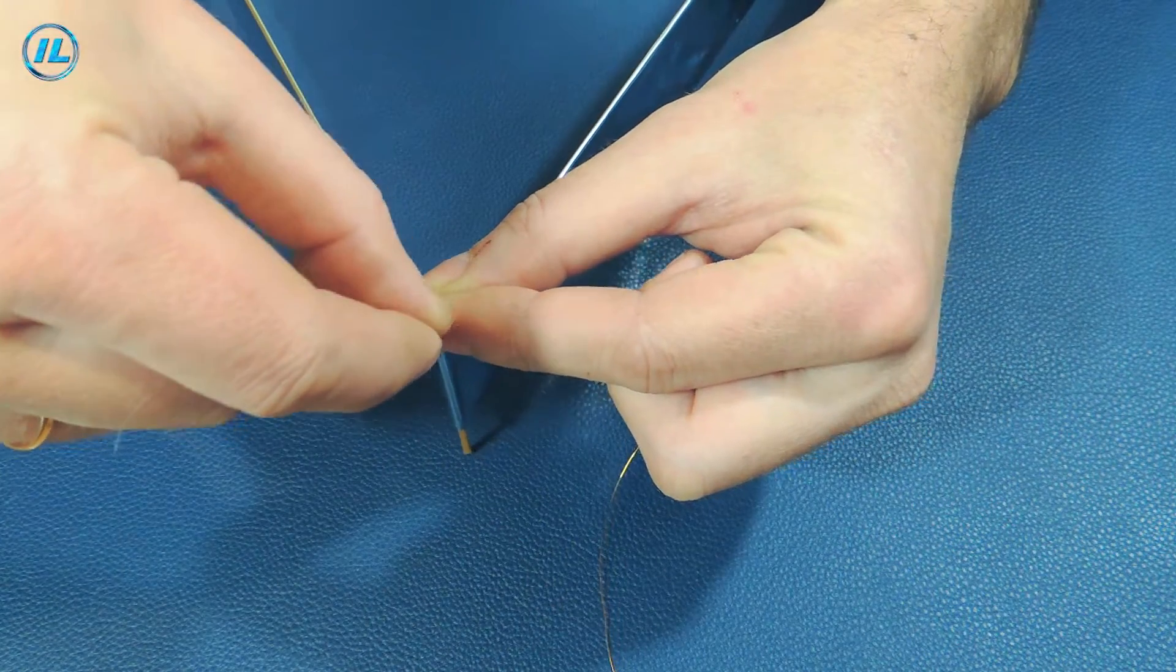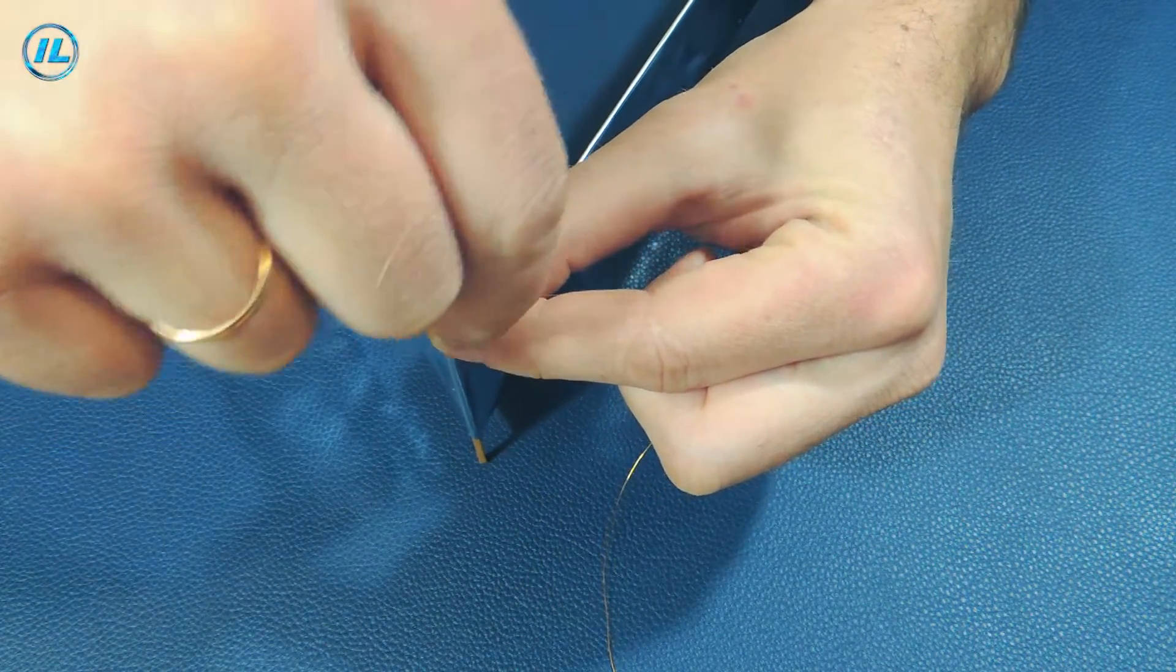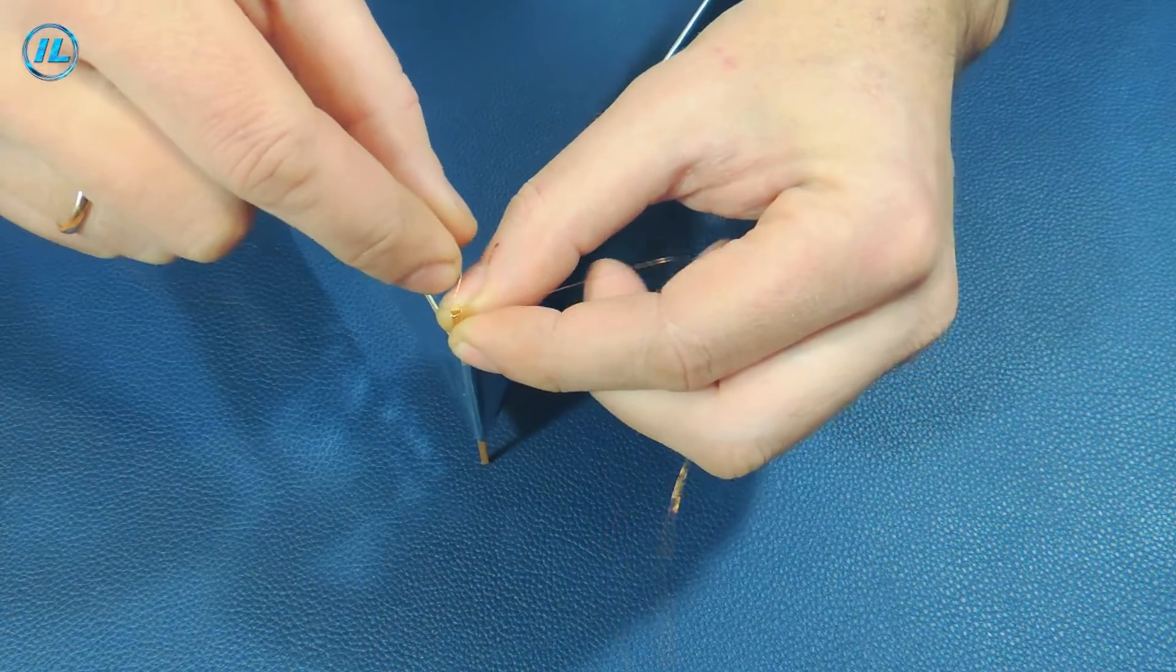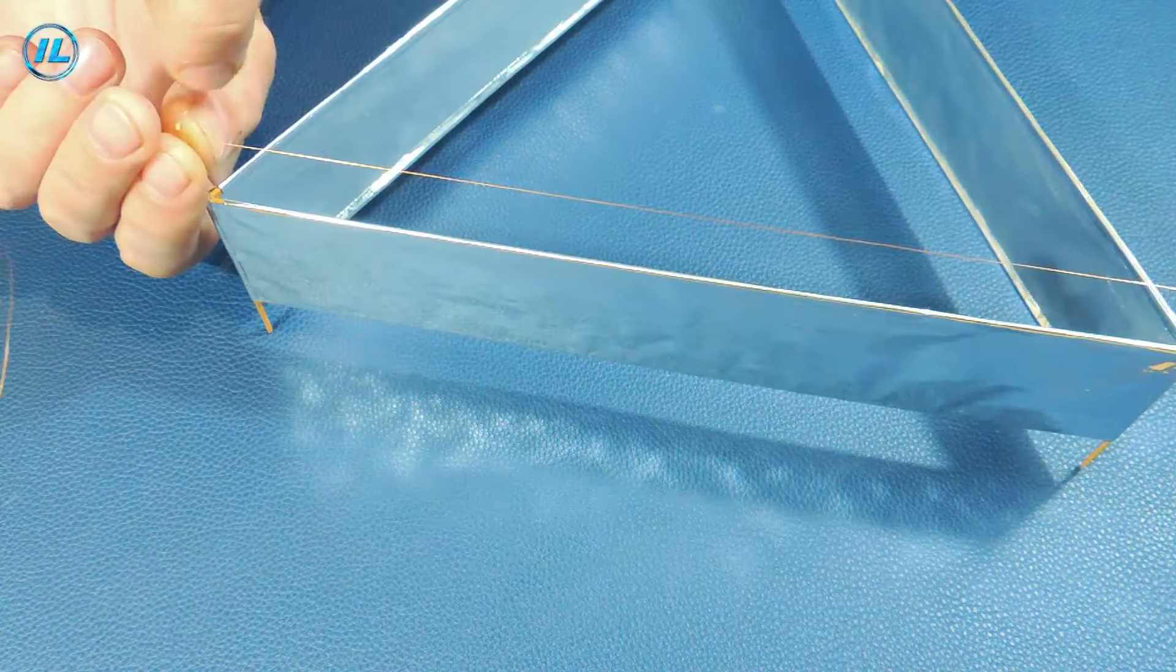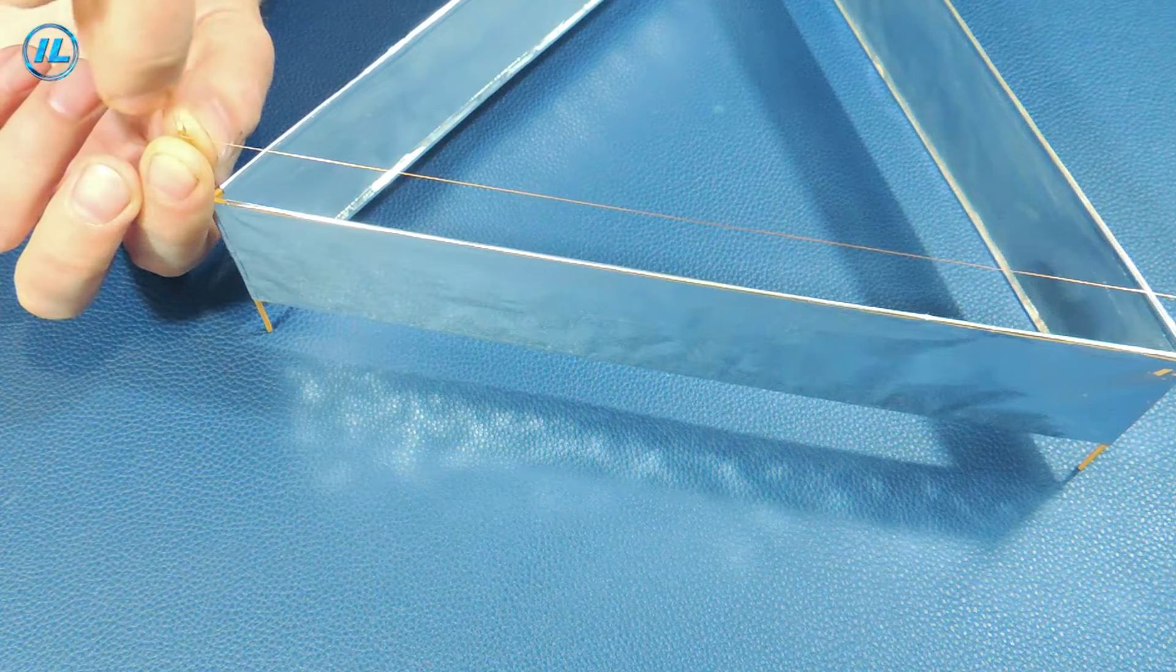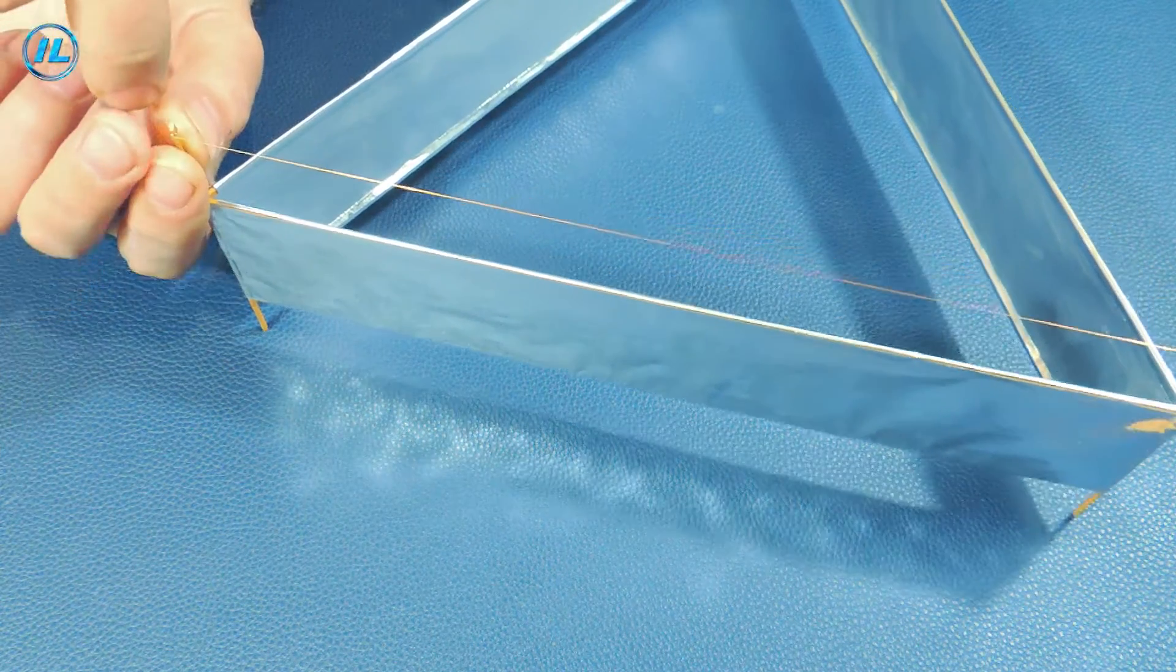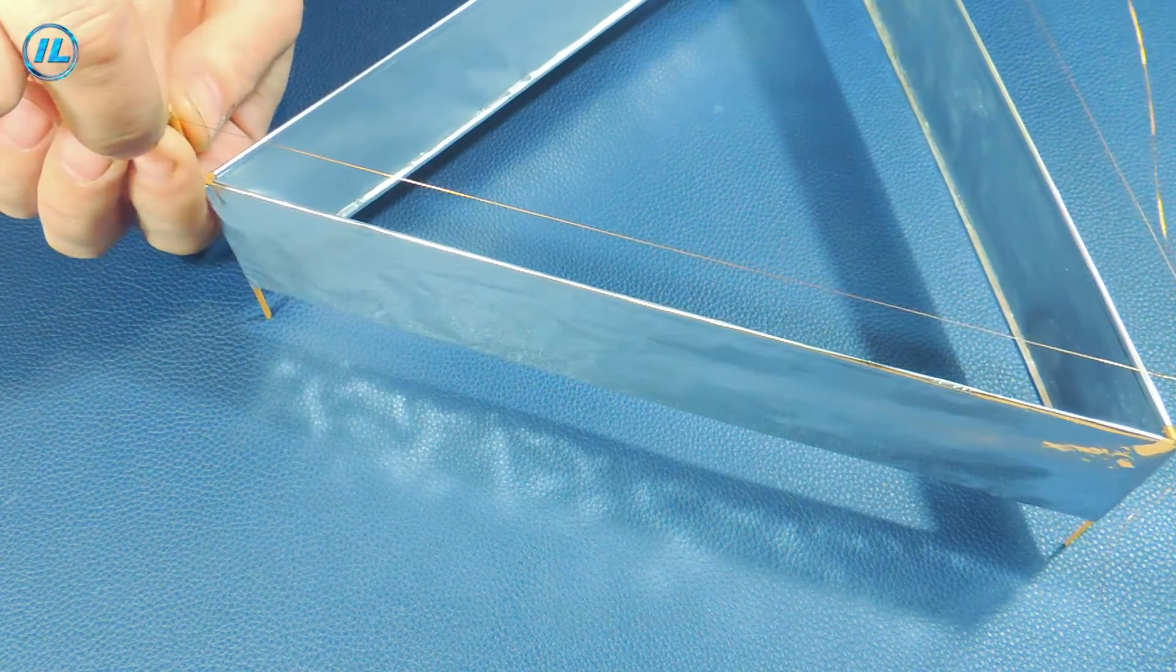At a distance of about 3 centimeters from the foil, I will fix a copper wire. It, as well as the foil, will be supplied with a voltage of 30,000 volts from a high-voltage generator.